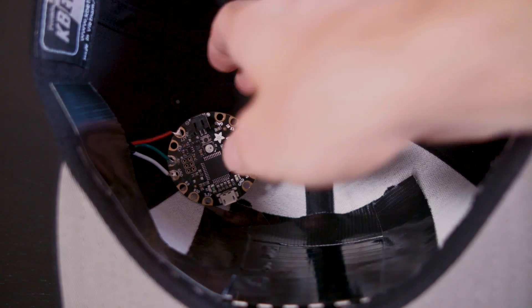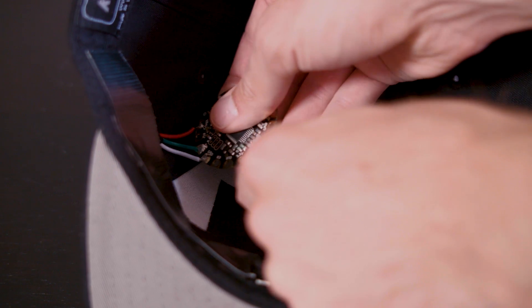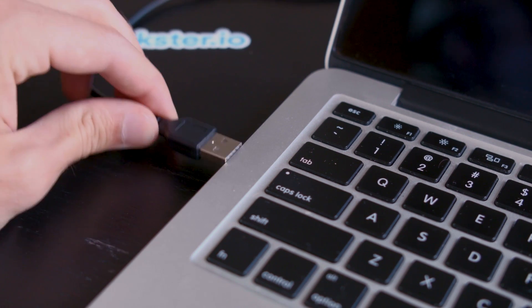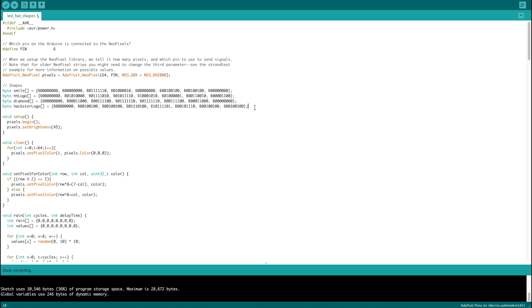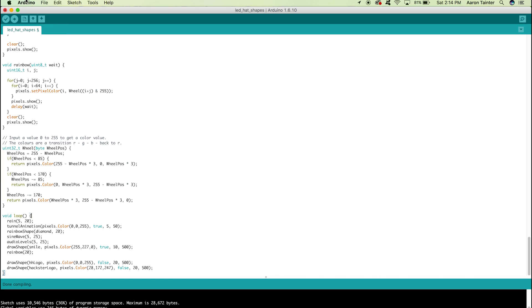We've provided all the code to run the animations in this video on our GitHub repository. After plugging the hat into a USB port on your computer, you'll need to open the Arduino sketch from the LED hat folder located in the repository files. All of the animation functions are called in the main loop at the bottom of the program. An explanation of the code will be covered in more detail on the hackster.io page.